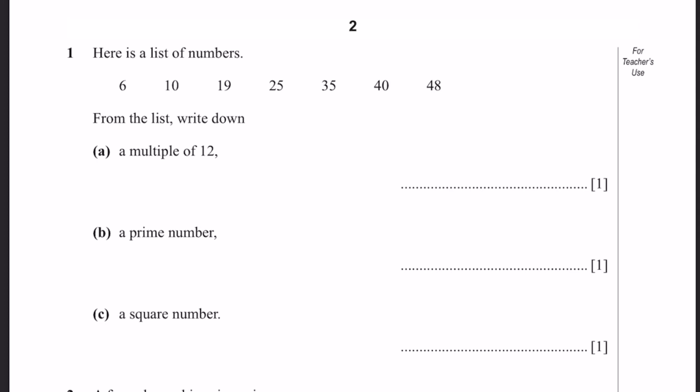Question 1. Here's a list of numbers: 6, 10, 19, 25, 35, 40, 48. From the list, write down a multiple of 12. Out of these numbers, only 48 is a multiple of 12. A prime number - there's only one prime number, which is 19 in this list. And a square number. It's 25, since 5 squared is equal to 25. It can also be minus 5 squared.